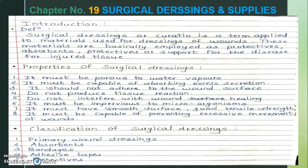For MCQ-based practice and theory exams, surgical dressings classification is a common question. The question typically asks which of the following are the classifications of surgical dressings, or asks to identify the exception. The options include: primary wound dressings, absorbents, bandages, adhesive tapes, and protectives.